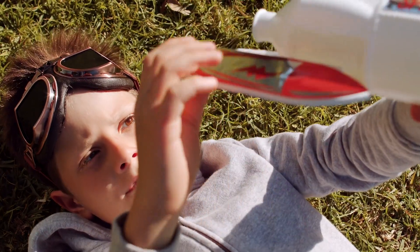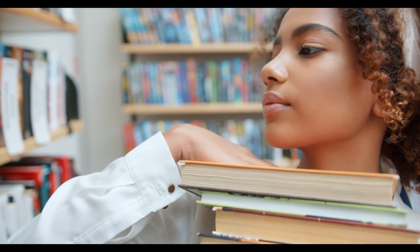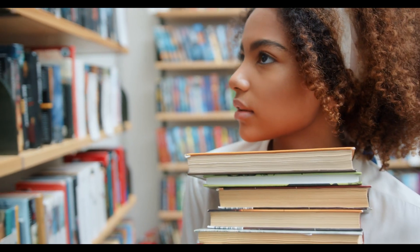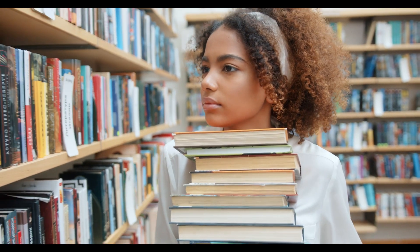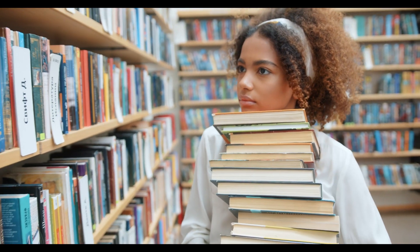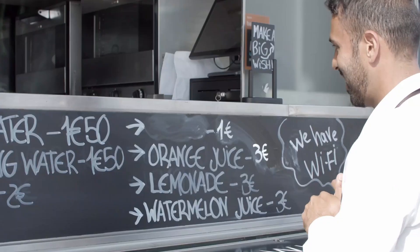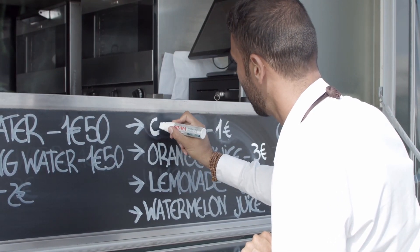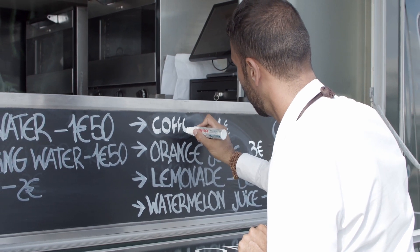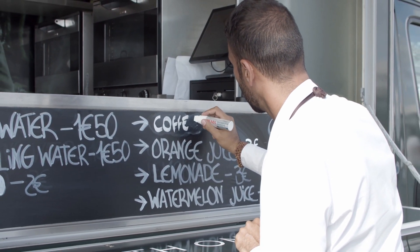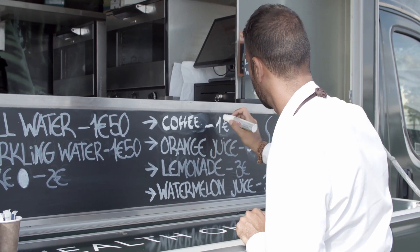Part two, implement the reward: for a given input prompt, two texts are generated — one by the initial language model and the other by the current fine-tuned model. The reward model evaluates the current policy's text, and the difference between the two is calculated using a penalty like the KL divergence. Part three, update the model: the PPO algorithm optimizes the language model's parameters, maximizing reward metrics while using gradient constraints to prevent destabilizing the learning process.